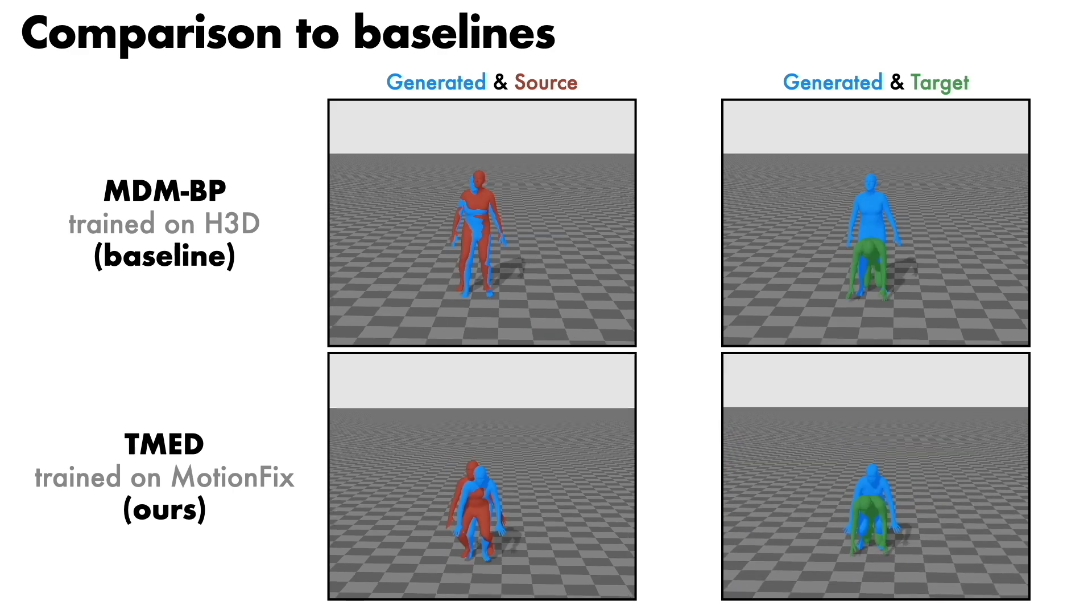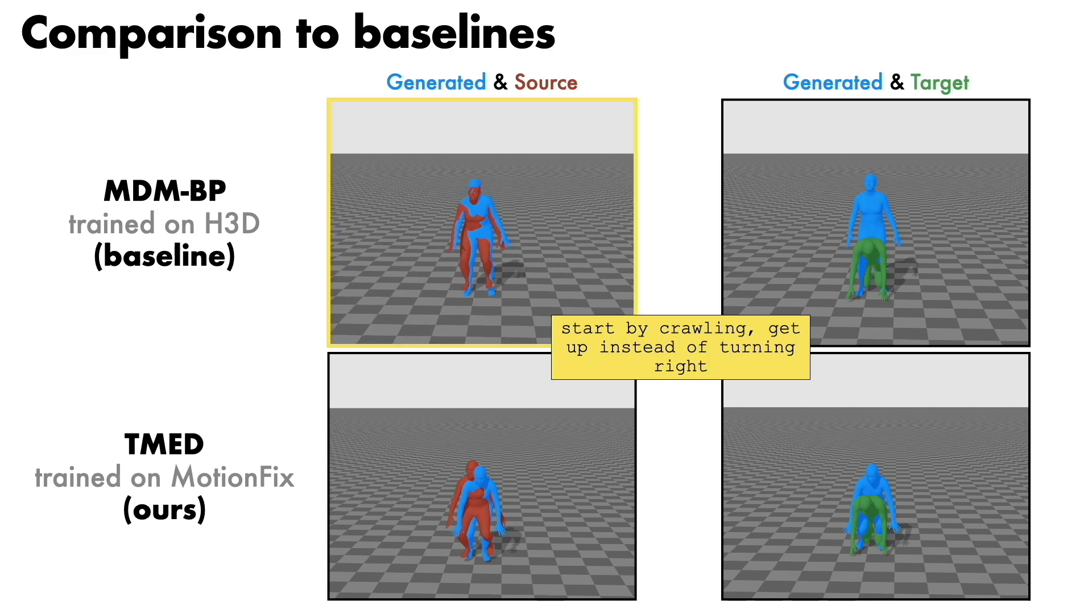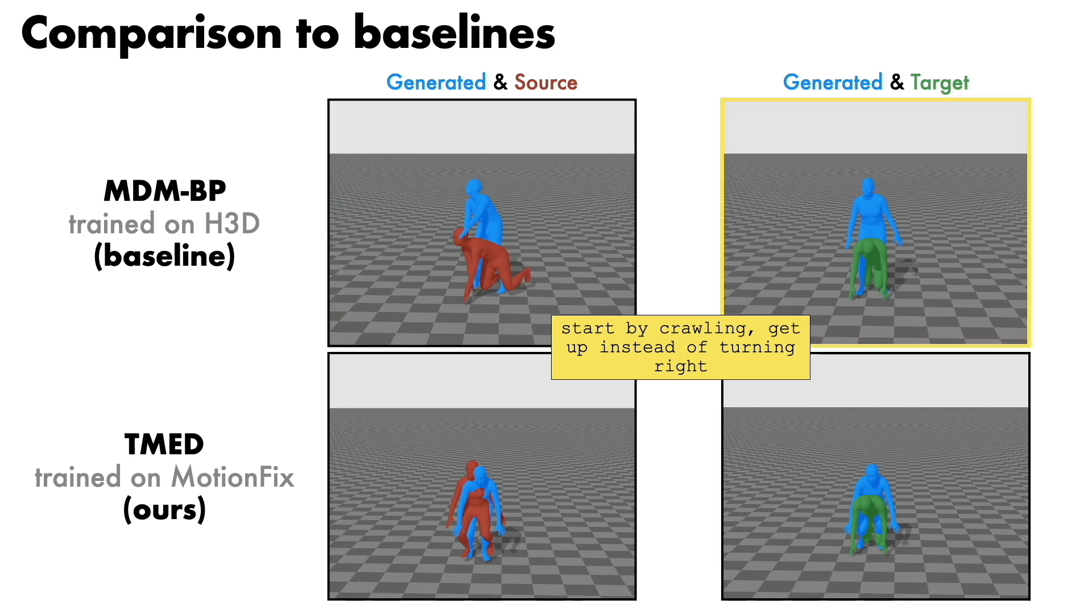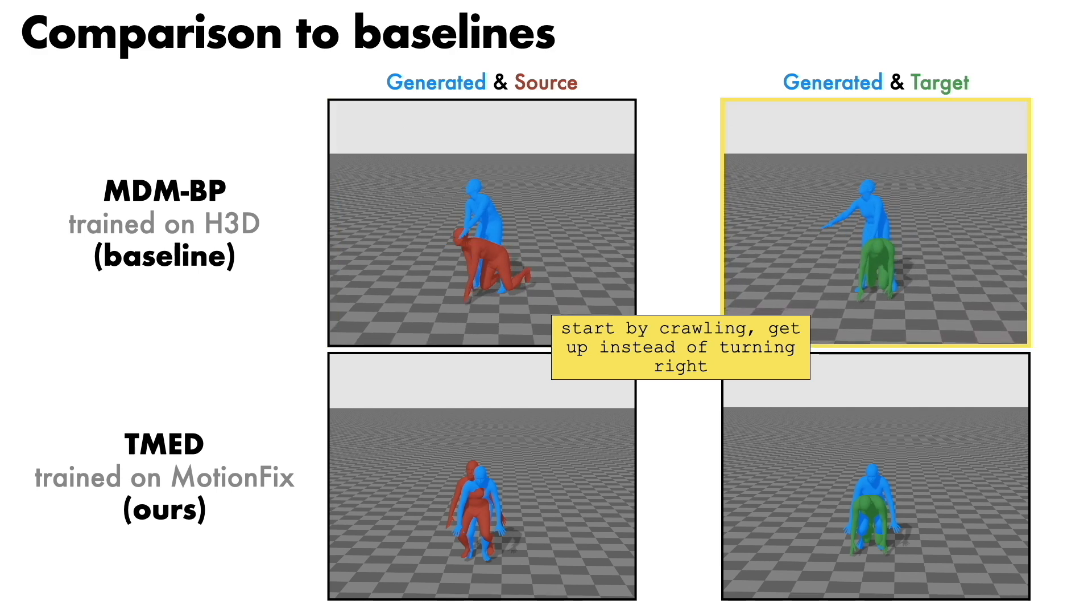For the edit text start by crawling, get up instead of turning right, MDM-BP attempts to get down but then standing, while TMED follows the edit instructions.